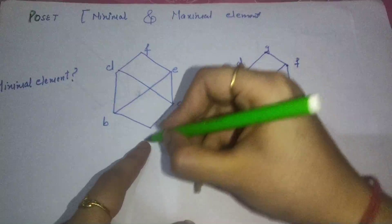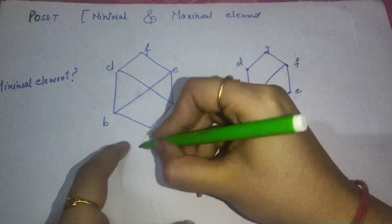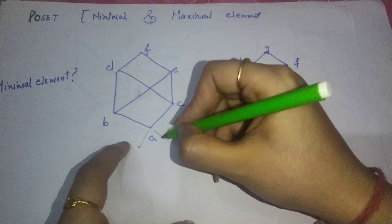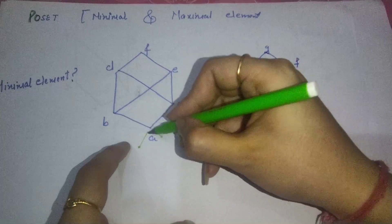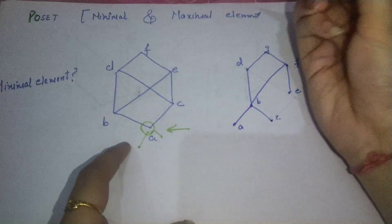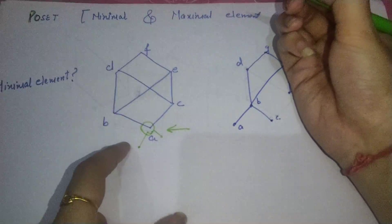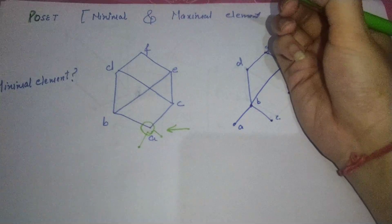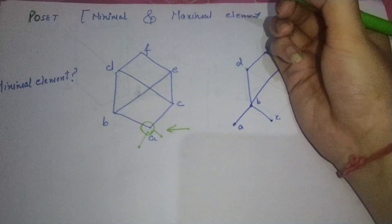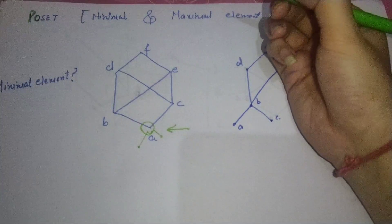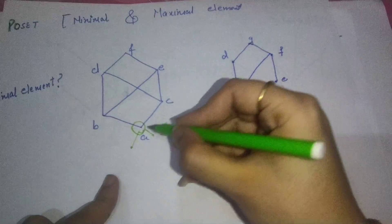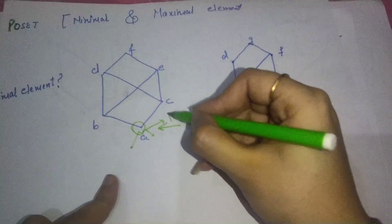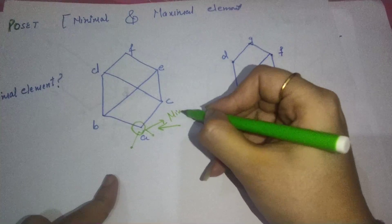These are such elements that there is no relation behind them. Like A — there is no relation behind it, so it is a minimal element. So A is your minimal element.